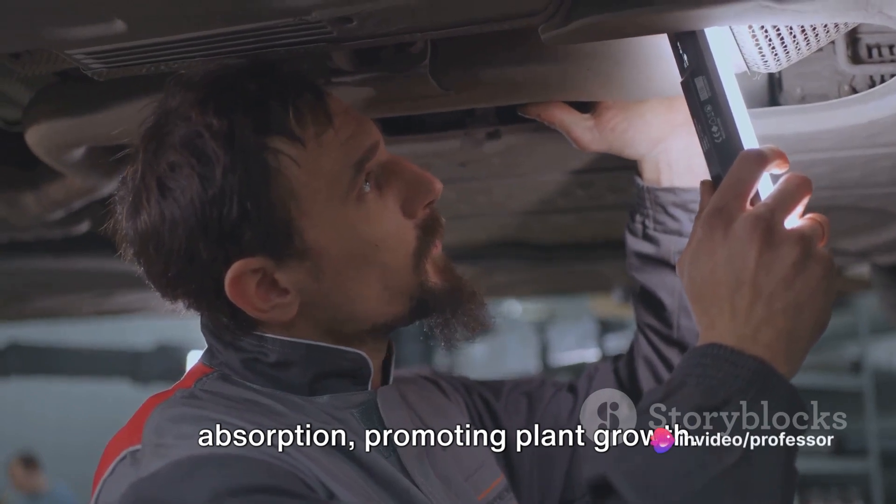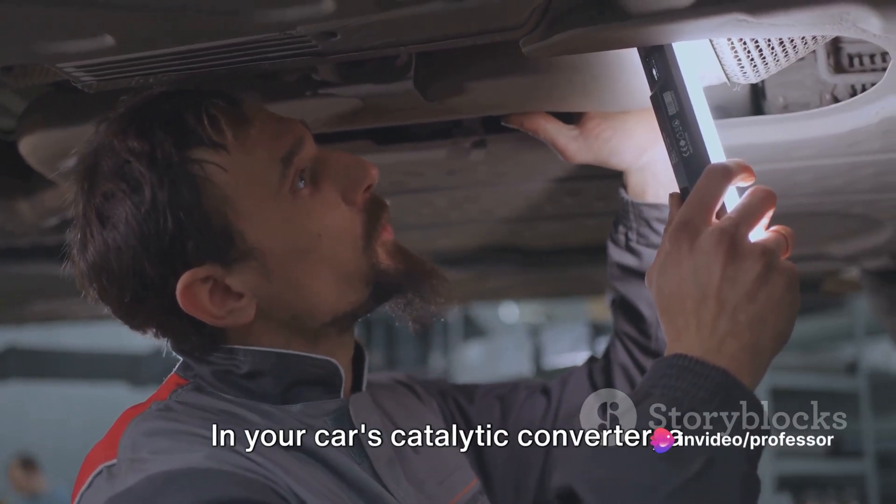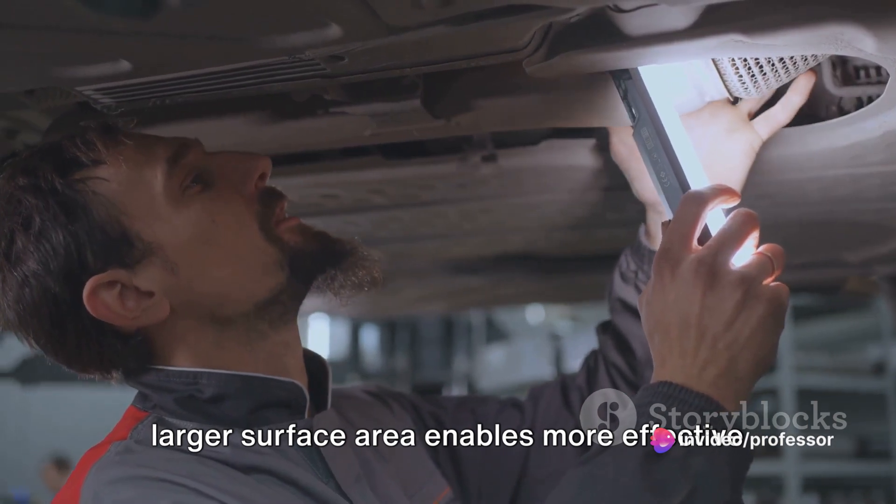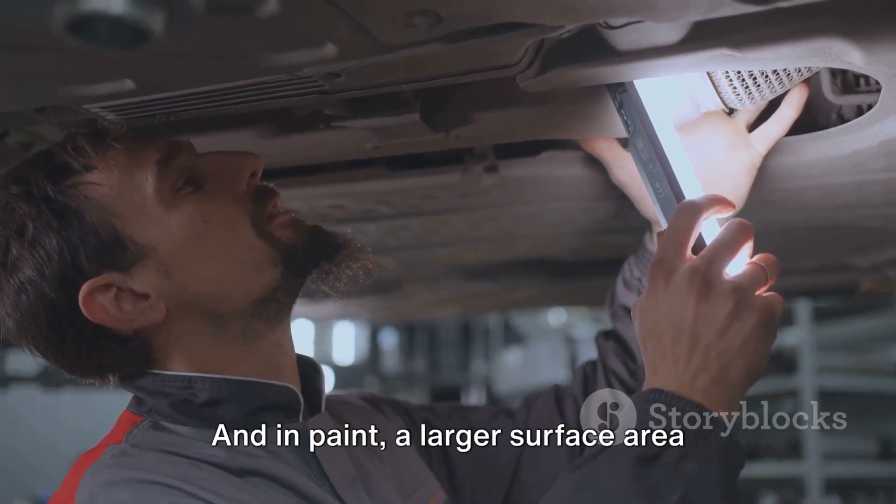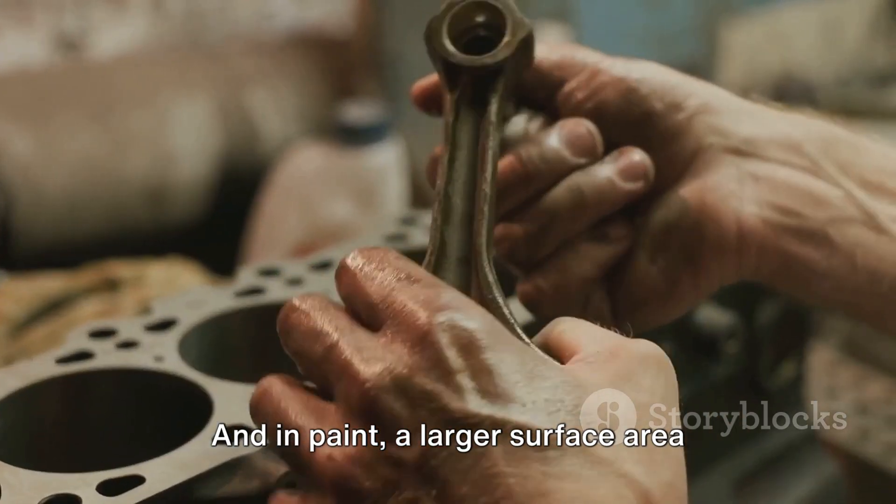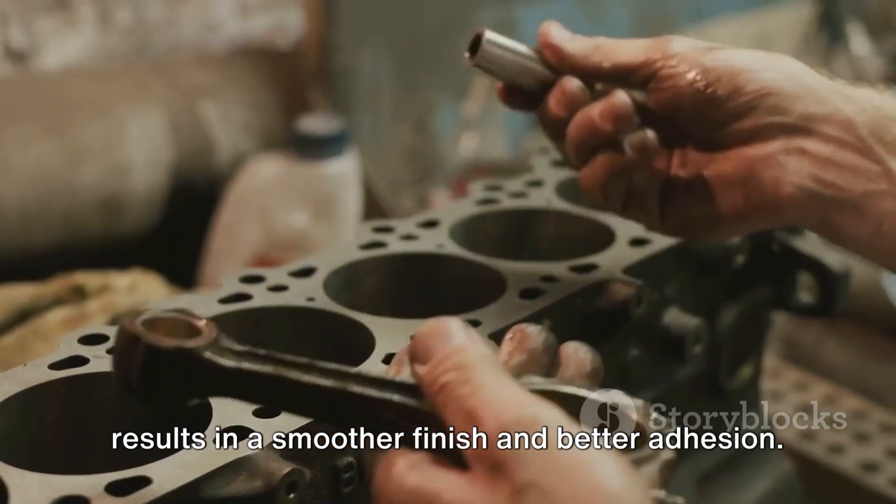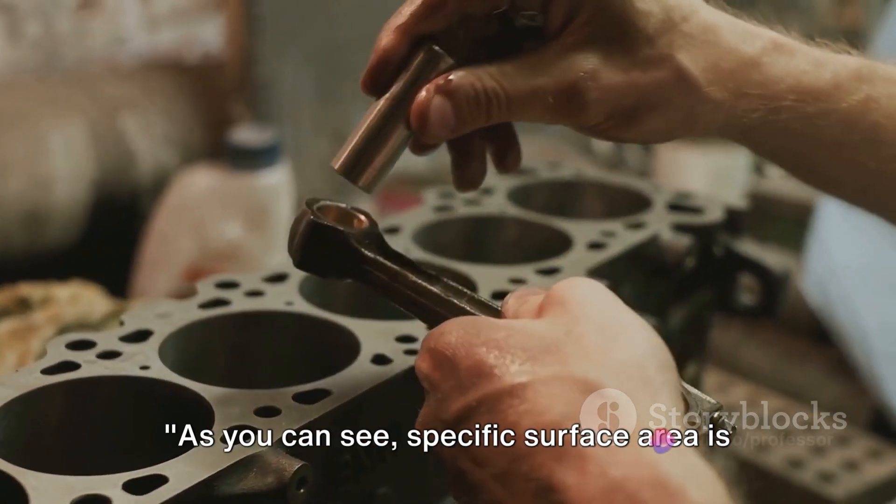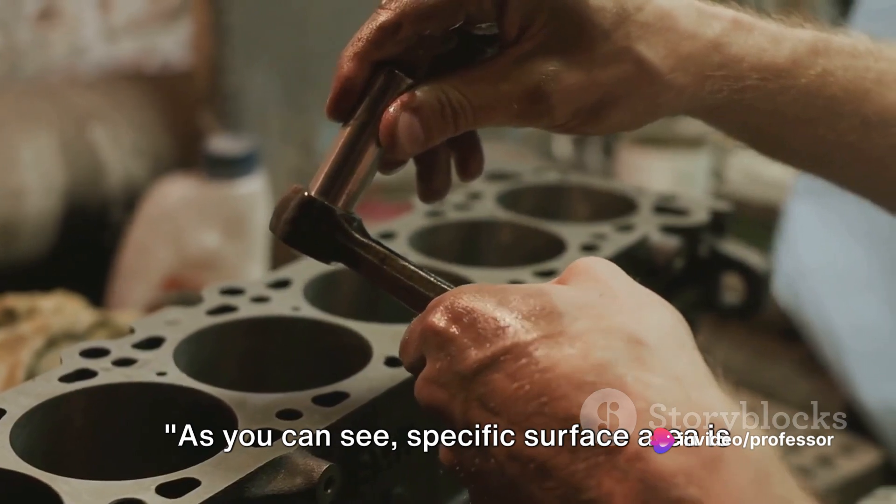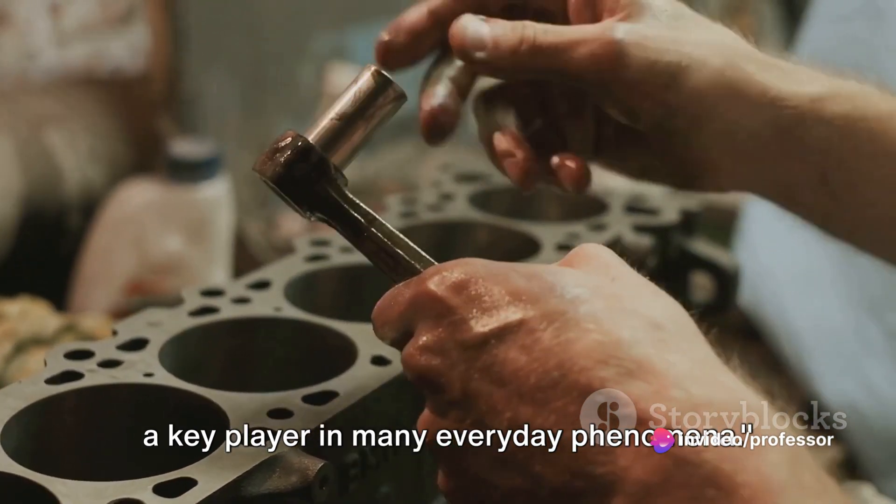In your car's catalytic converter, a larger surface area enables more effective emission control. And in paint, a larger surface area results in a smoother finish and better adhesion. As you can see, specific surface area is a key player in many everyday phenomena.